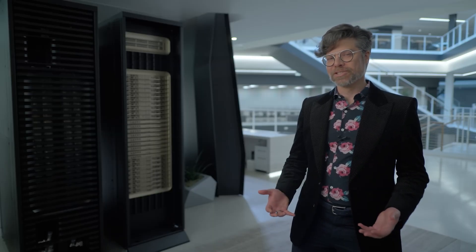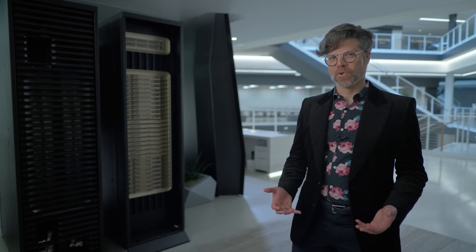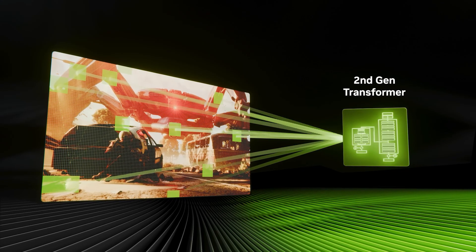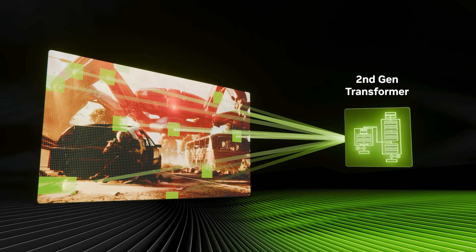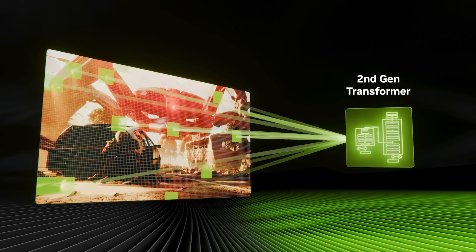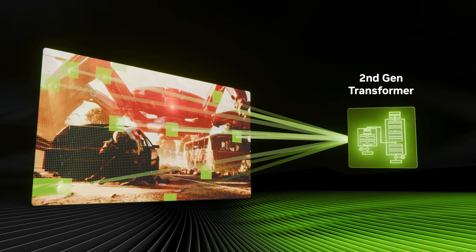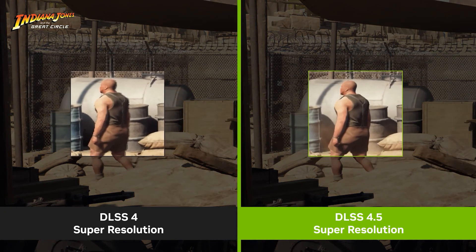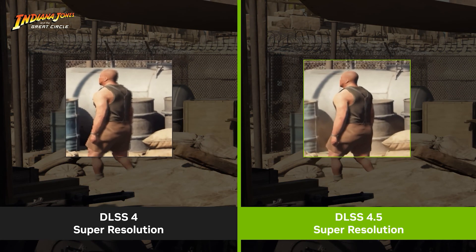We're releasing our second generation transformer for super resolution. It's five times more compute and is trained on an expanded dataset, so the model has greater context awareness of every scene and more intelligent use of pixel sampling and motion vectors. These improvements make super resolution performance and ultra performance mode so much better, with superior anti-aliasing for smoother edges.